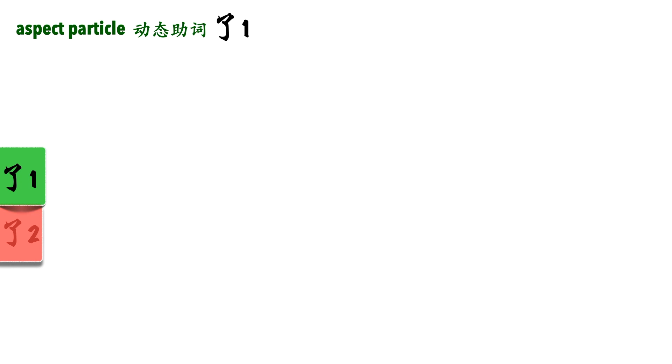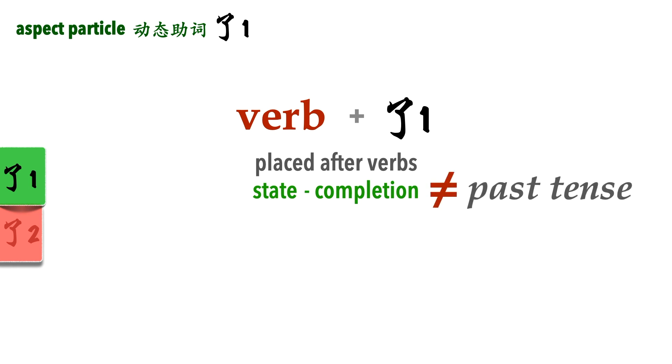Aspect particle 勒1. What is an aspect particle in Mandarin and what does it do? An aspect particle is placed after a verb and it expresses the state of the action. In the case of 勒1, it gives us information about the completion of the action. Many people confuse this with tense and think that the completion of an action equals past tense. It's not. In English, the tense tells us whether an action is in a past, present or future. But in the case of 勒1, it tells us the state of the completion of the action at a certain point in time.